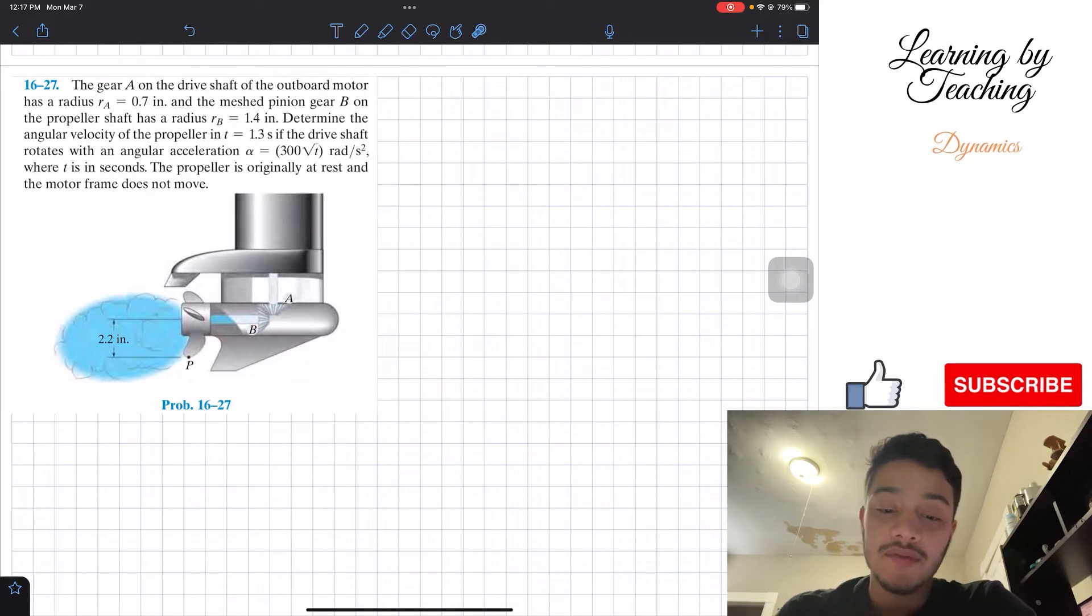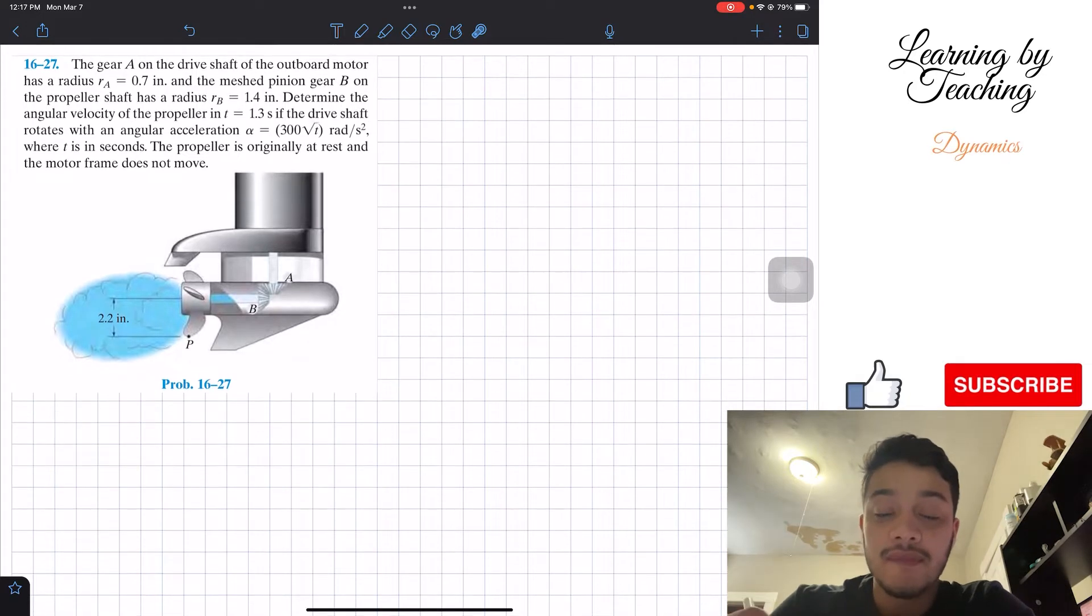Determine the angular velocity of the propeller at t equals 1.3 seconds if the drive shaft rotates with an angular acceleration alpha equals 300 times the square root of t in radians per second squared, where t is in seconds. The propeller is originally at rest and the motor frame does not move.